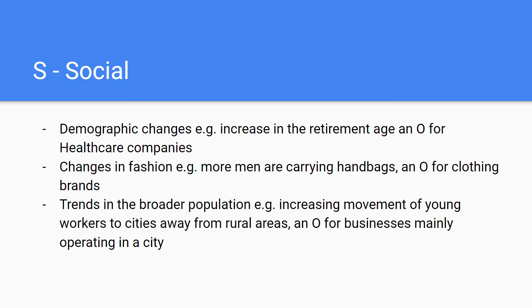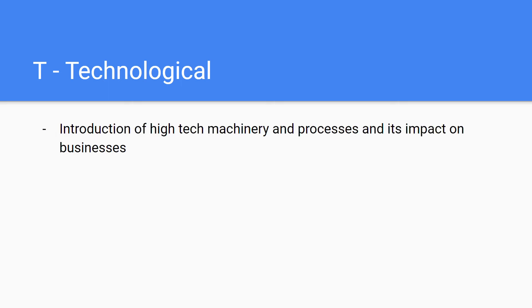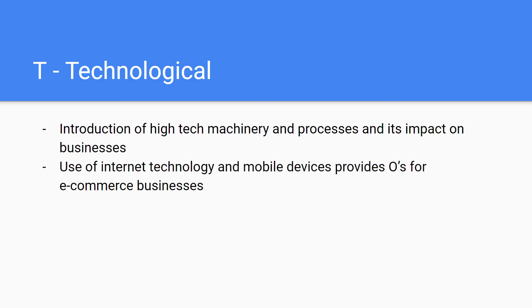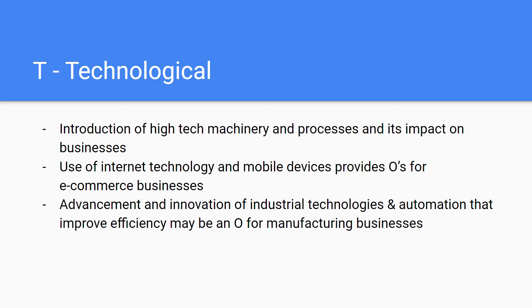The next factor is Technological. As the name suggests, it's about the introduction of high-tech machinery and processes into society and their impact on businesses. For example, the use of internet technology and mobile devices provides an opportunity for all e-commerce businesses, but also for businesses that simply have an e-commerce site. The advancement and innovation of industrial technologies and automation could improve efficiency in operations.